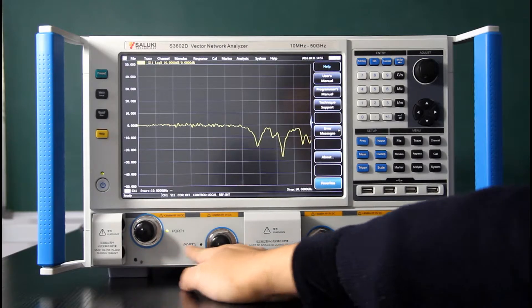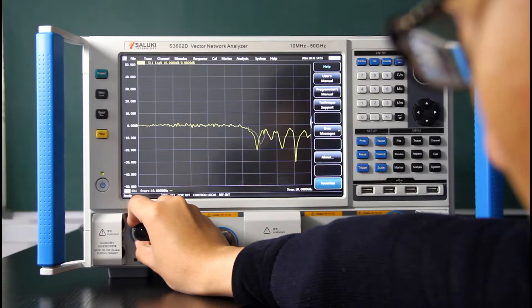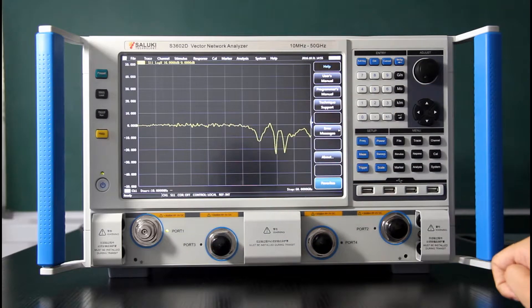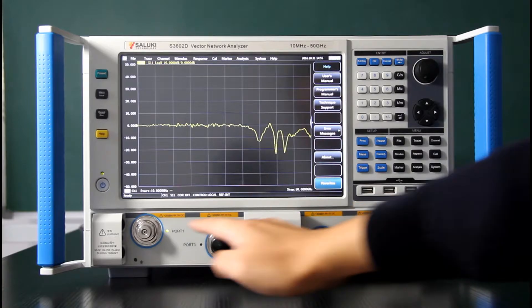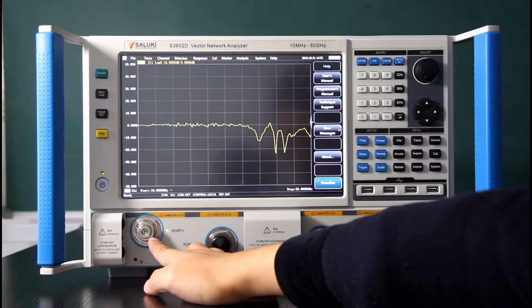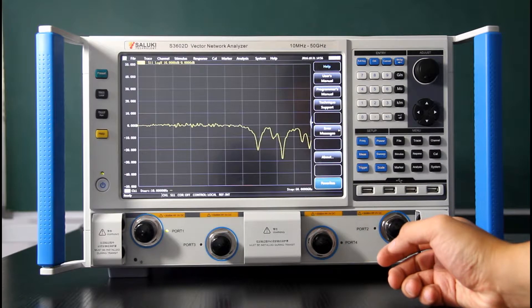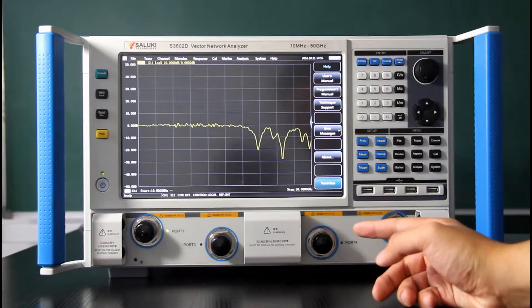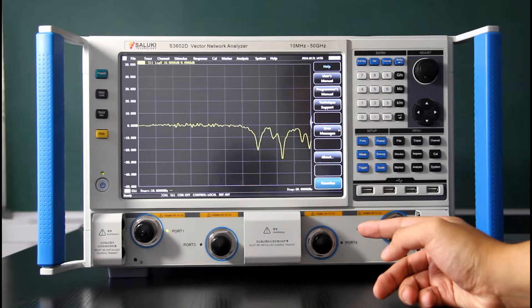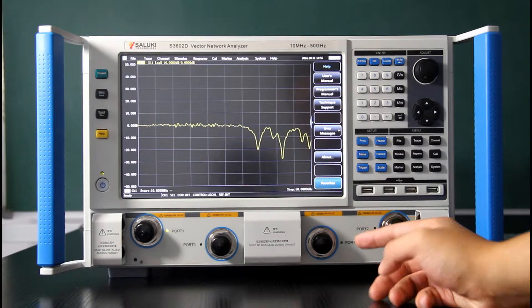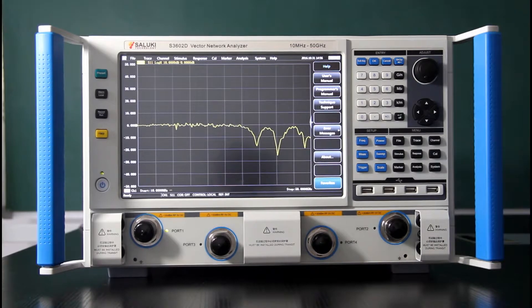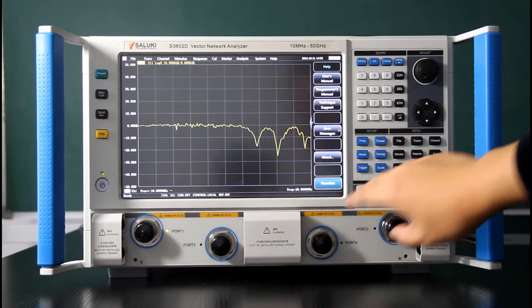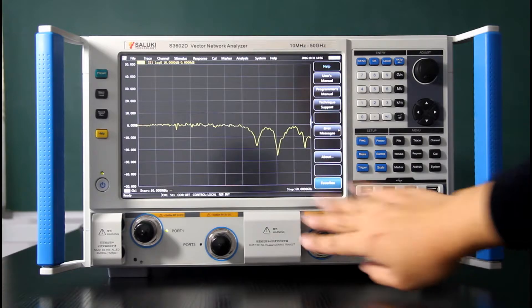Then there are four ports here, four test ports. For this S3602D reaches 50 GHz so the test port here is a 2.4 mm test port. This is not a standard package. The standard package only has two test ports. This has a 400 option which is a four port test. So we have four test ports here. Here are some shields. There are some loops to be protected under it.